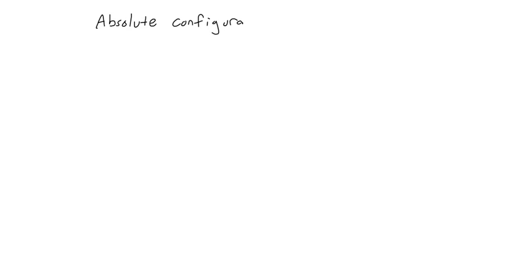Hello and welcome back to another video of Total Organic Chemistry. In this video we're going to be taking a look at more stereochemistry topics, this time a discussion on absolute configuration in chiral molecules and how to determine it. Absolute configuration is a way for us to systematically name compounds that are chiral. Just like we have our rules for naming alkanes or other compounds, we also have rules for naming those same compounds if they happen to contain stereocenters — systematic nomenclature for chiral molecules.